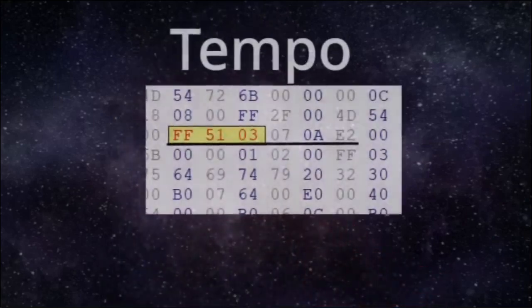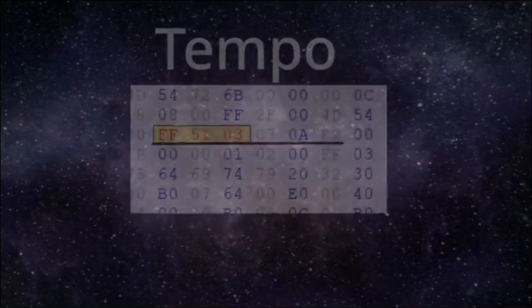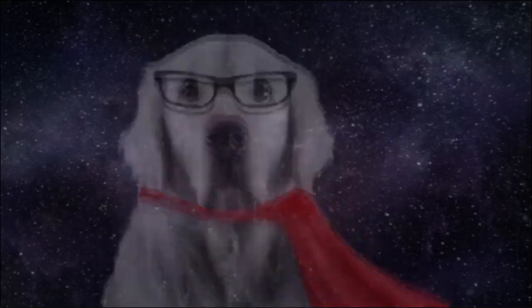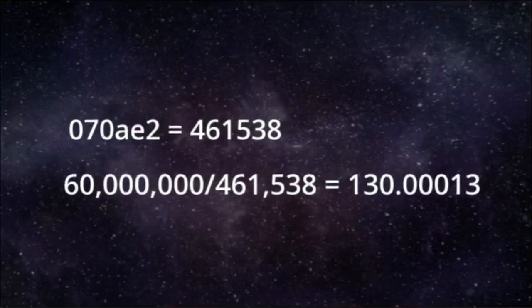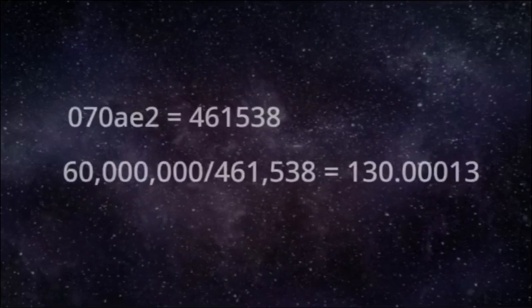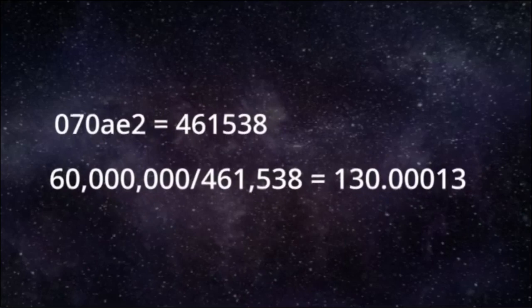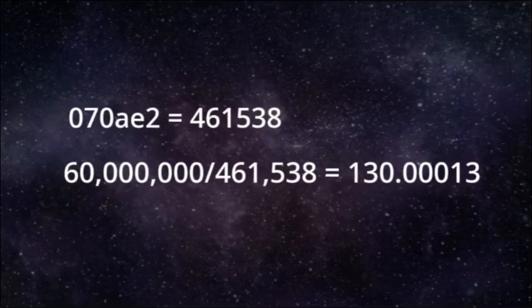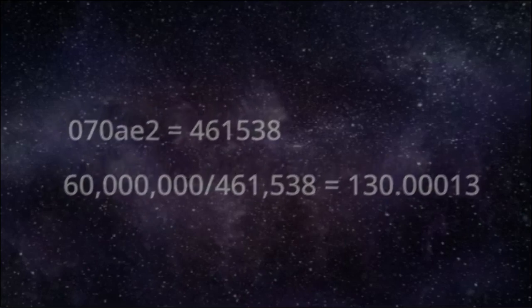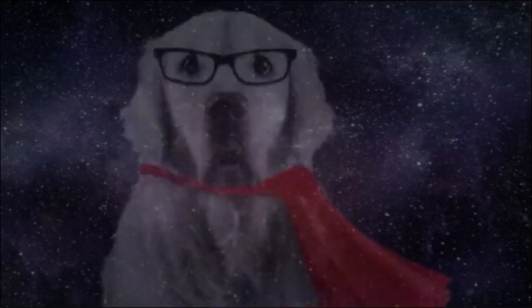Most MIDI files will also have a tempo, marked by FF 51 03. The tempo is also encoded differently. To get the real tempo, convert the 3 bytes to decimal, then divide 60 million by the number. In my MIDI, it says 07 08 2A, which is 461538 in decimal. 60 million divided by 461538 is approximately 130, so my tempo is 130 BPM. If your quotient is more than a hundredth off, then the tempo is probably a decimal.